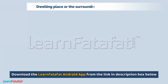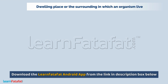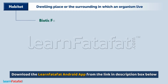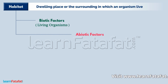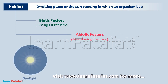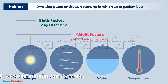The dwelling place or the surrounding in which an organism lives is called its habitat. Every habitat has biotic factors, which consist of living organisms, and abiotic factors, which consist of non-living factors such as sunlight, air, water, and temperature.